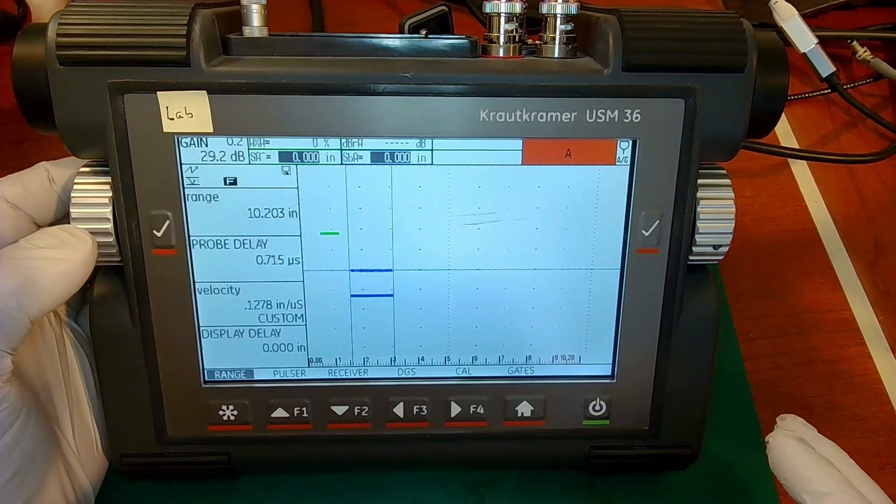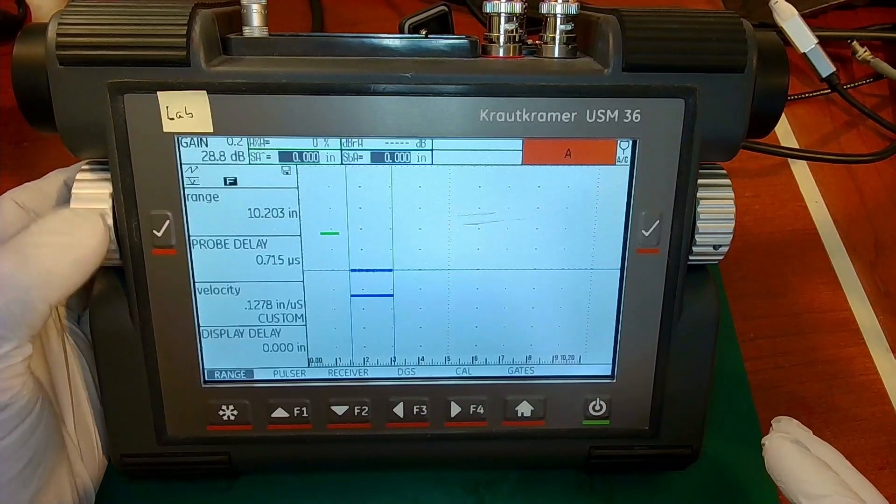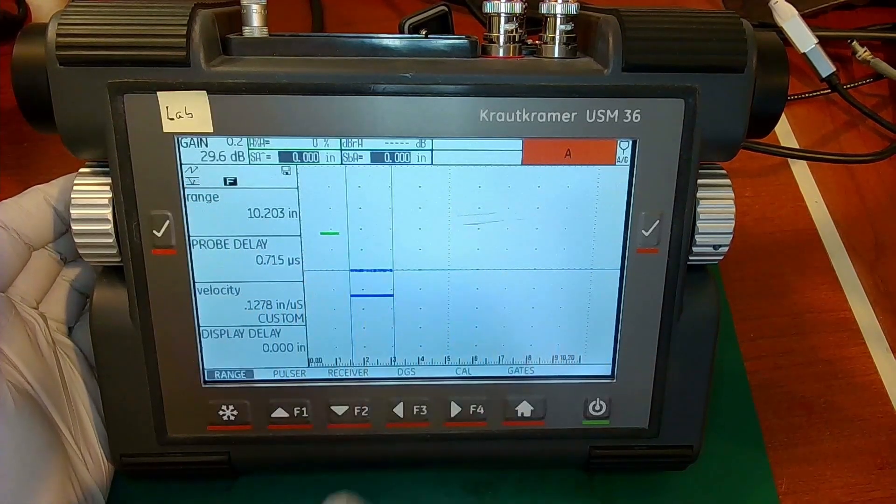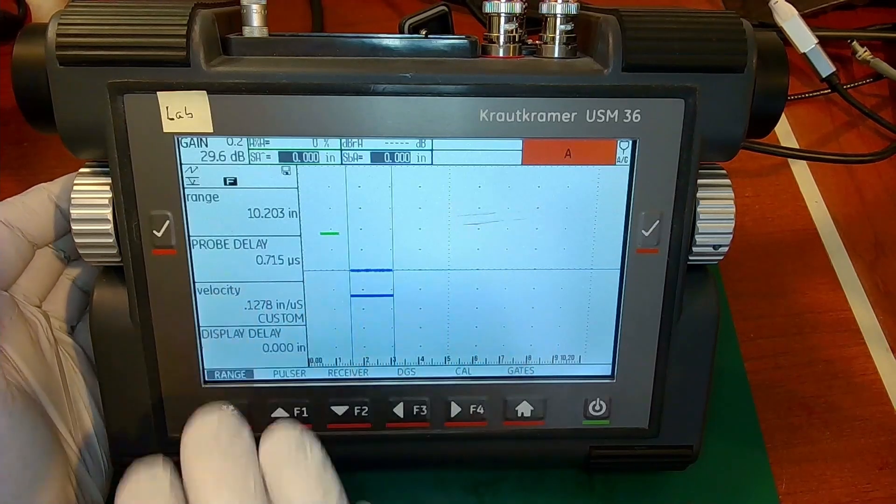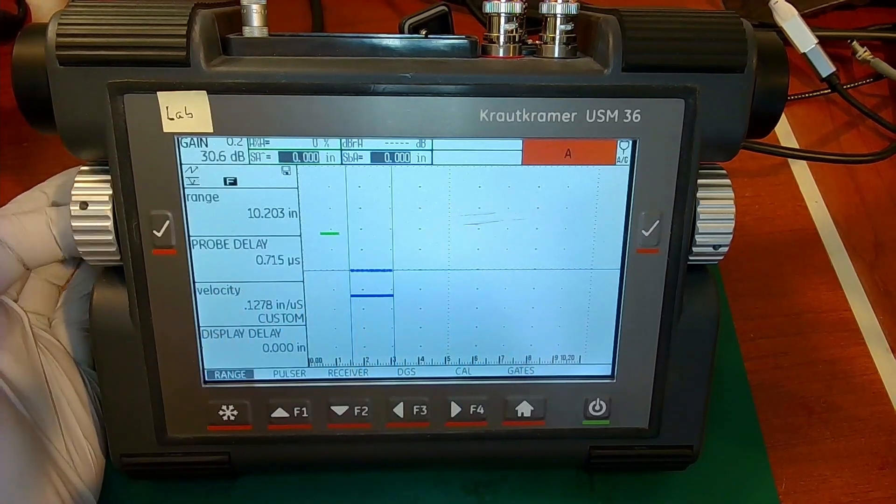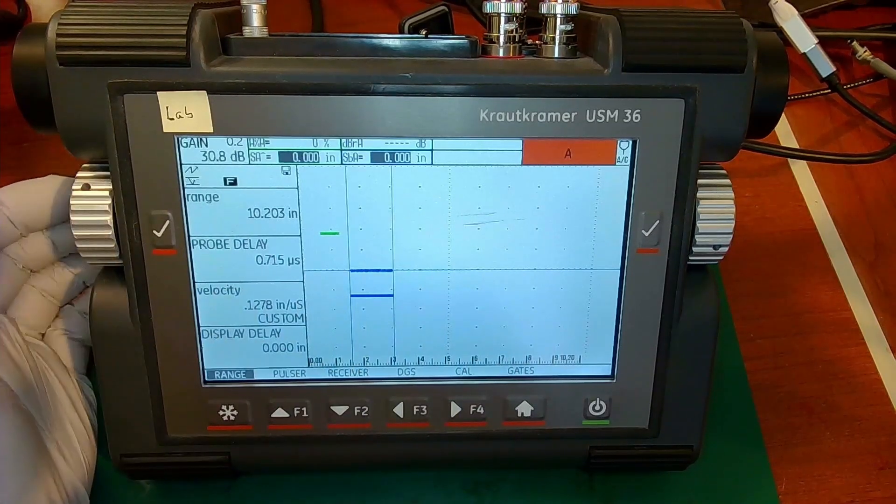Now, as we mentioned, the left knob is permanently assigned to gain. So anytime you're in this mode where you can see the A scan and you have the menus active, the left knob is always your gain control. We don't use that for other things.